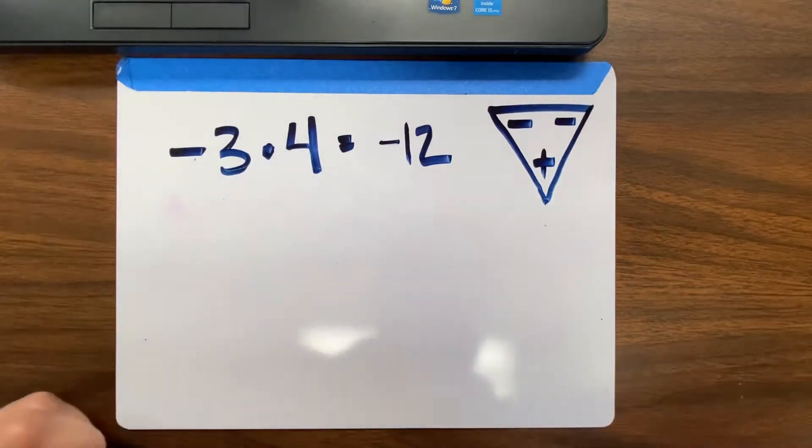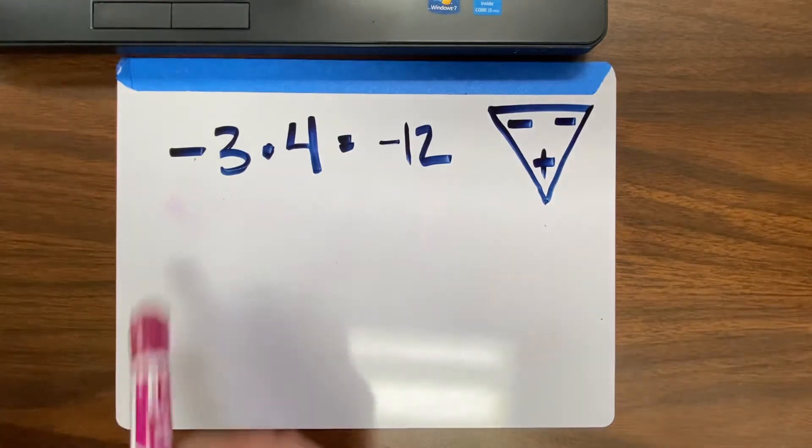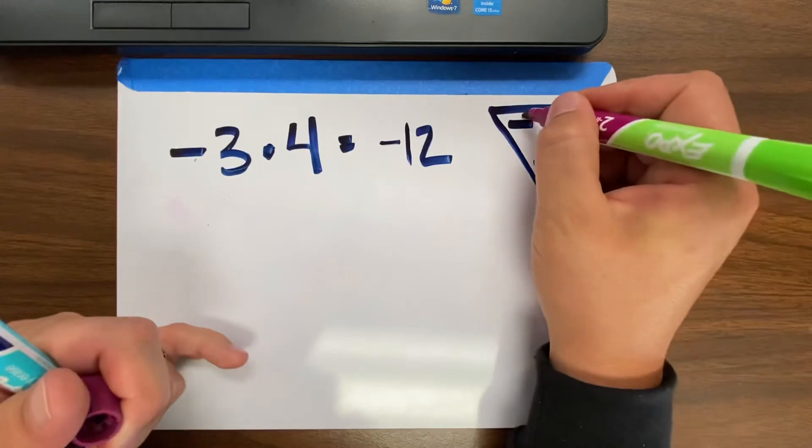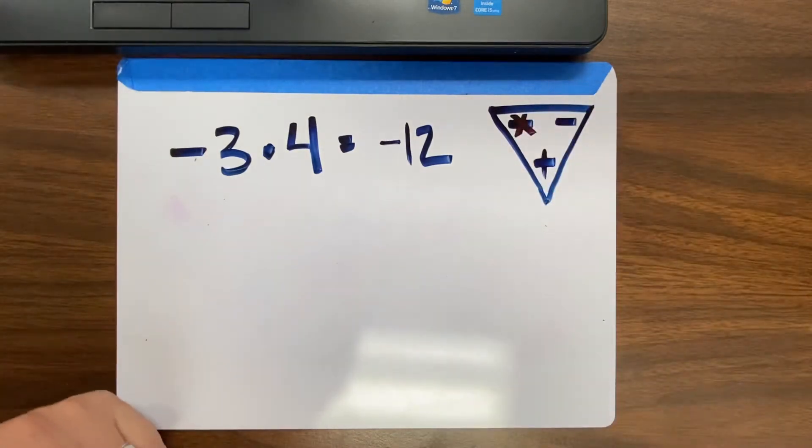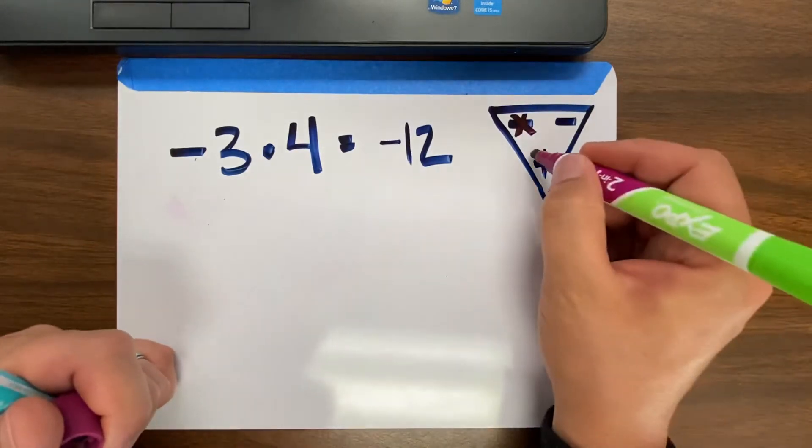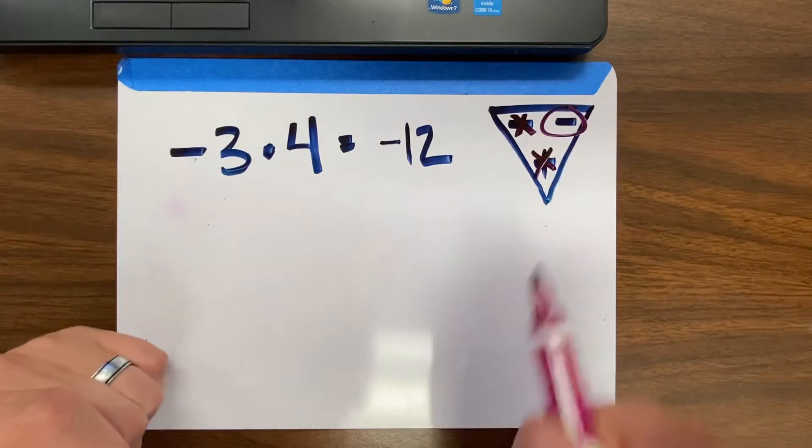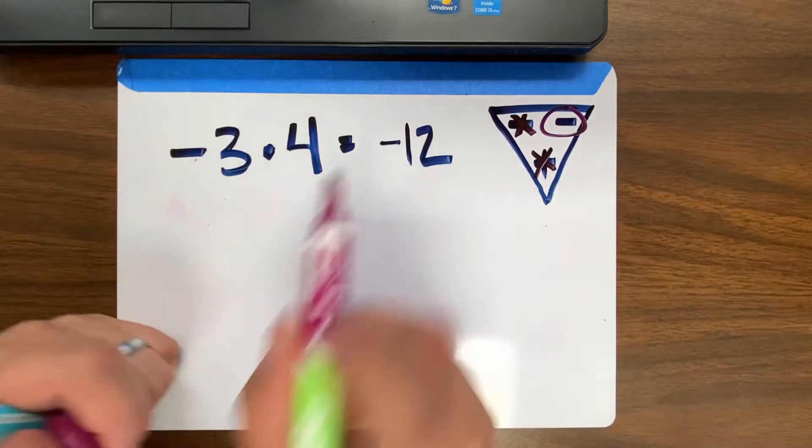What you're going to do is look at the first number. The first term is negative 3. It's negative, so that means you'd get rid of one of the negatives. The second term is positive, so you'd get rid of the positive. Whatever's left is always going to be your answer. So my answer is negative 12.